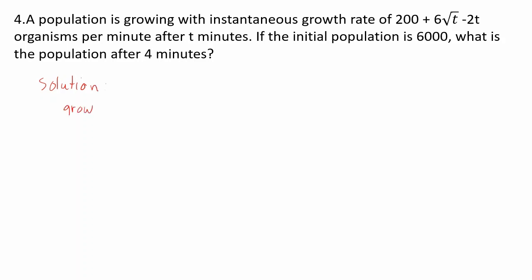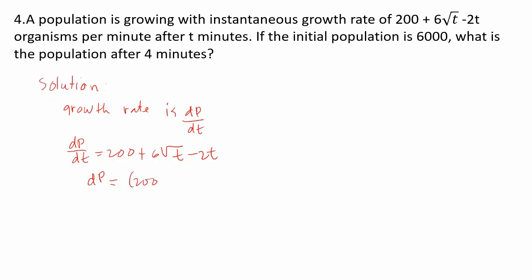The growth rate is dp over dt. So dp over dt equals 200 plus 6 square root of t minus 2t, and dp equals (200 plus 6 square root of t minus 2t) dt. Integrating both sides: